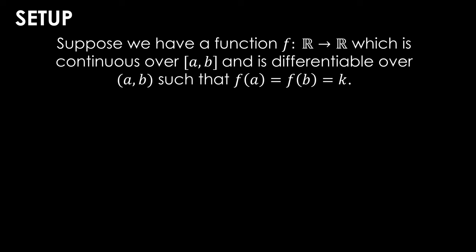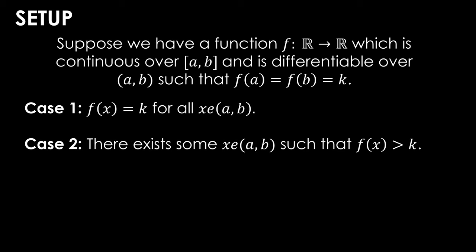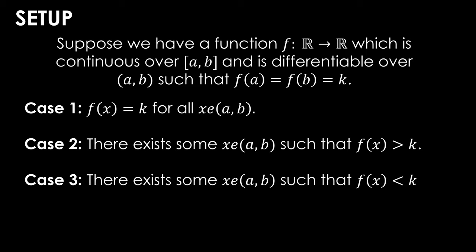We're going to tackle three cases in this proof. Case one says that f(x) is equal to k for all x in the interval a to b — essentially a completely horizontal straight line. In case two, there exists some x in the open interval a to b such that f(x) is greater than k, so the function has a local maximum. And in case three, we do the same as case two, except that f(x) is smaller than k, so the function has a local minimum.